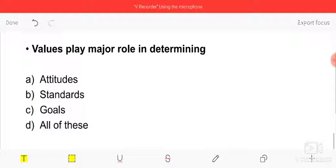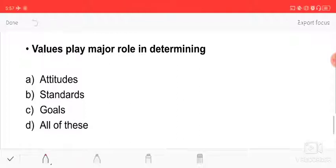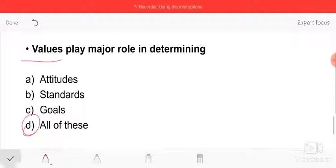Values play a major role in determining - because values are the most important factor that humans possess. Values depend on all things like attitude, standards, and goals. All of these - attitudes, standards, and goals - all depend upon values.